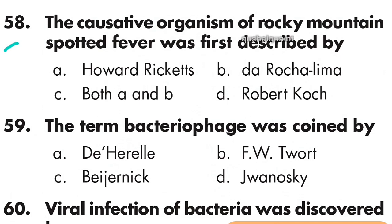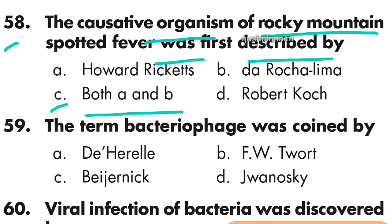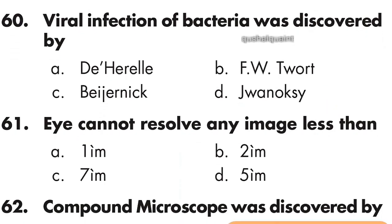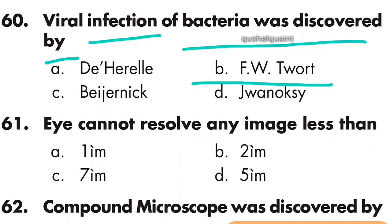Question number 58: The causative organism of Rocky Mountain Spotted Fever was first described by Howard Ricketts and Da Rocha-Lima. Option C is right. Question number 59: The term 'bacteriophage' was coined by d'Herelle. Option A is right — d'Herelle. Question number 60: Viral infection of bacteria was discovered by F.W. Twort. Option B is right — F.W. Twort.